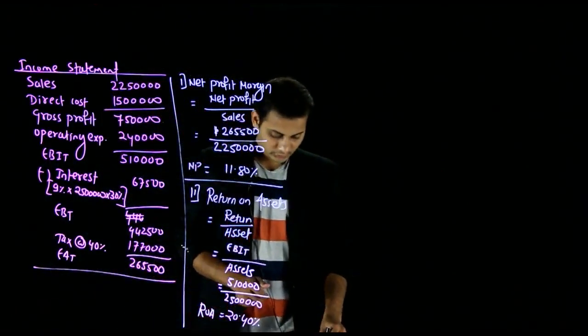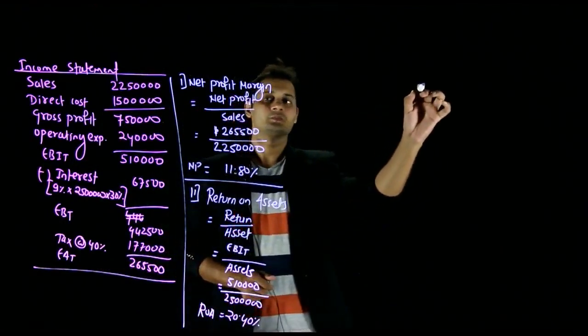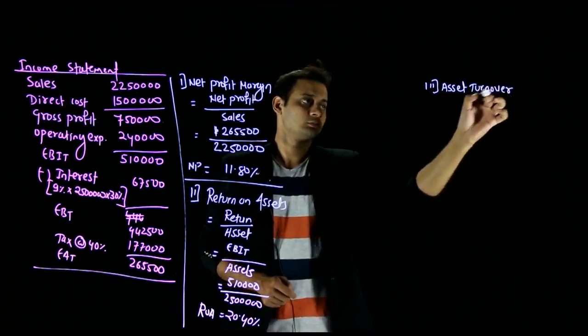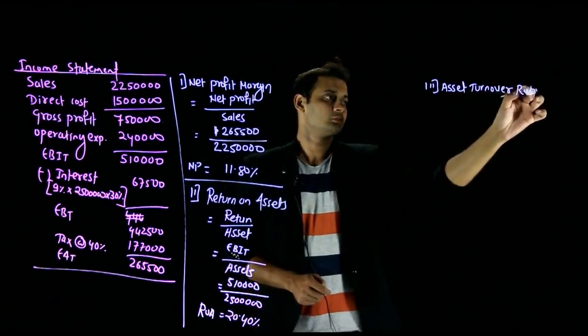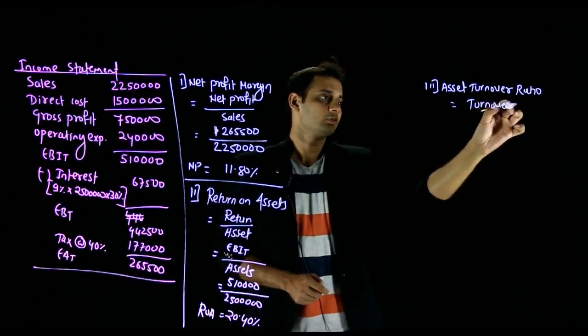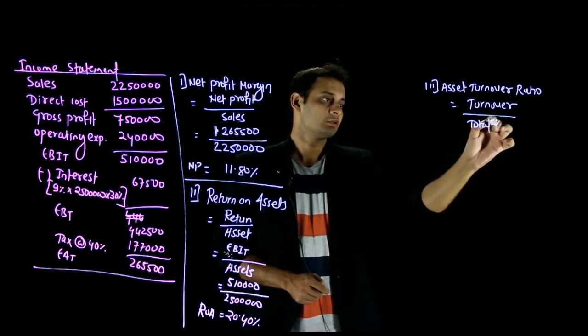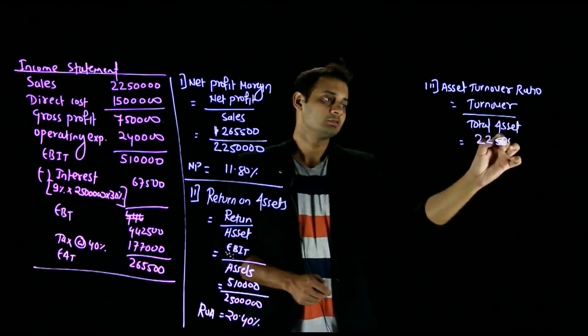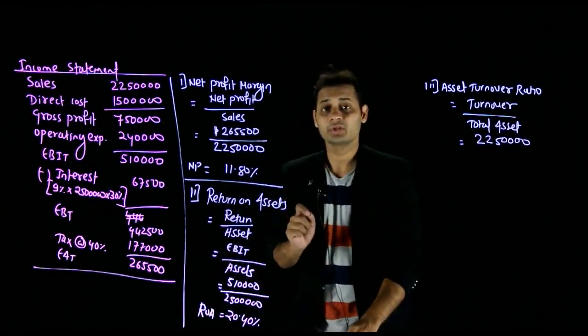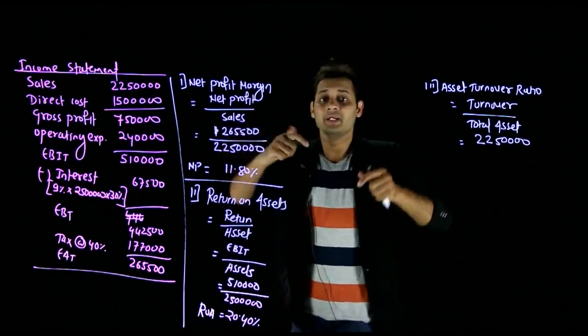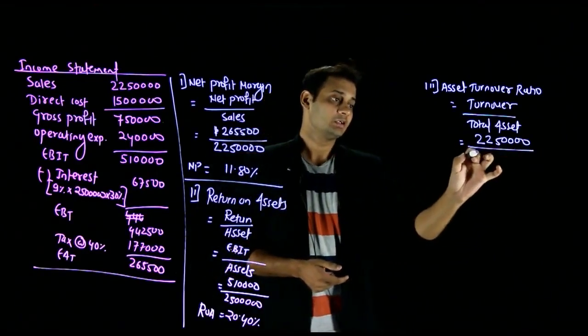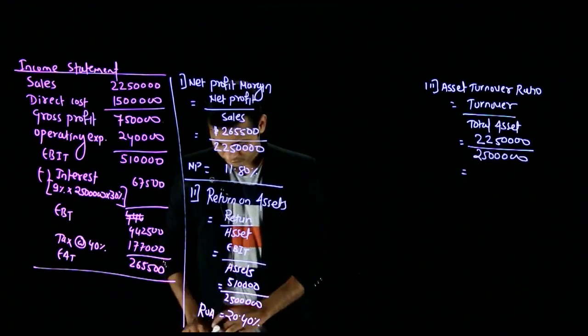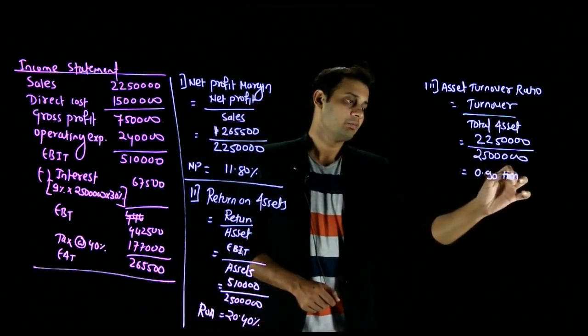Next, asset turnover ratio: sales divided by total assets. 22,50,000 divided by 25 lakh gives us 0.90. This means the assets have not even converted once fully.